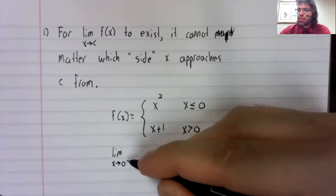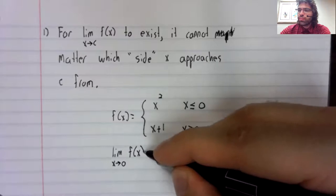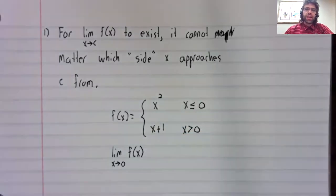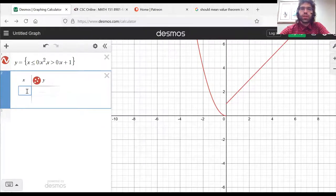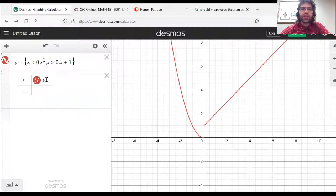And let's go to Desmos and investigate what happens as X approaches zero. Here we are. Here's the graph. Here we'll create the table of values.